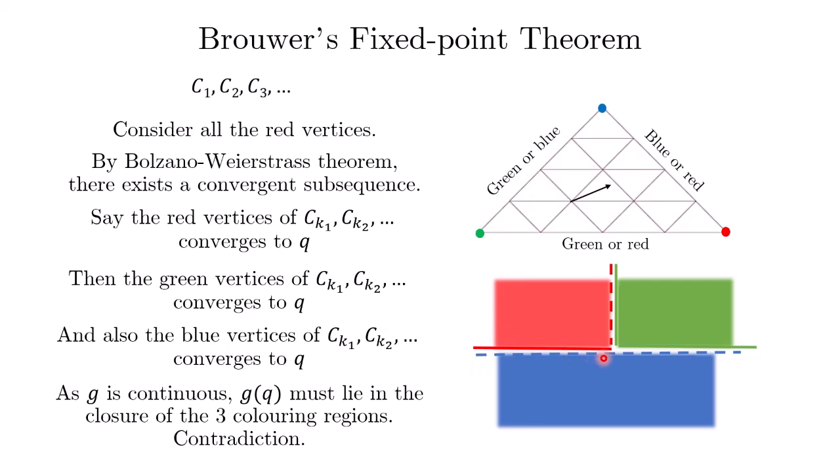This means that g can only lie in the intersection of the closure of these three regions, which is (0, 0), but we assumed that g is never (0, 0). So this gives us the required contradiction.